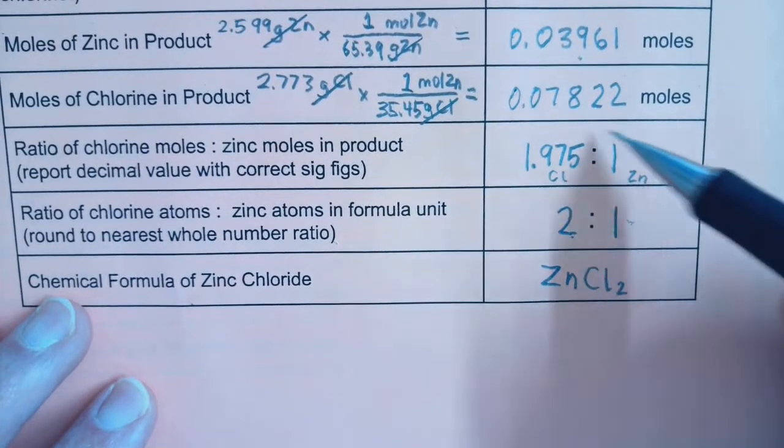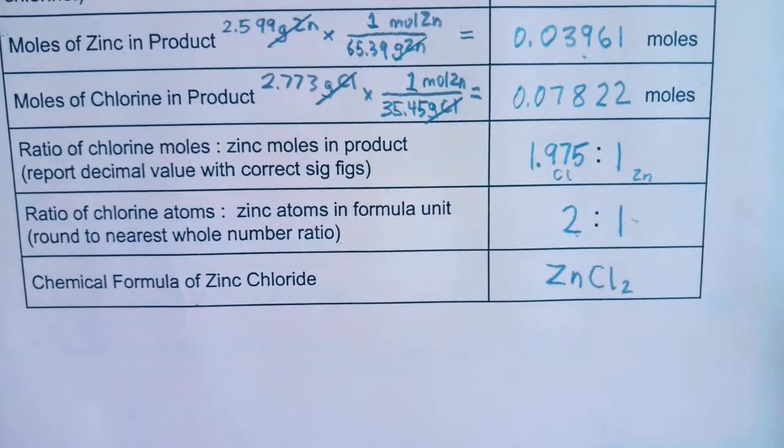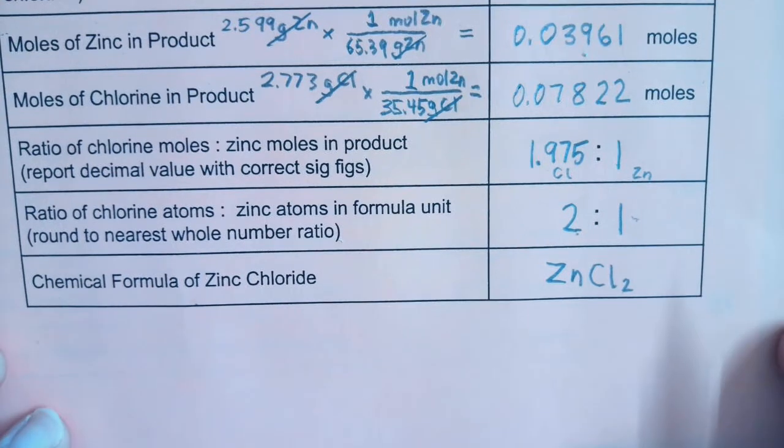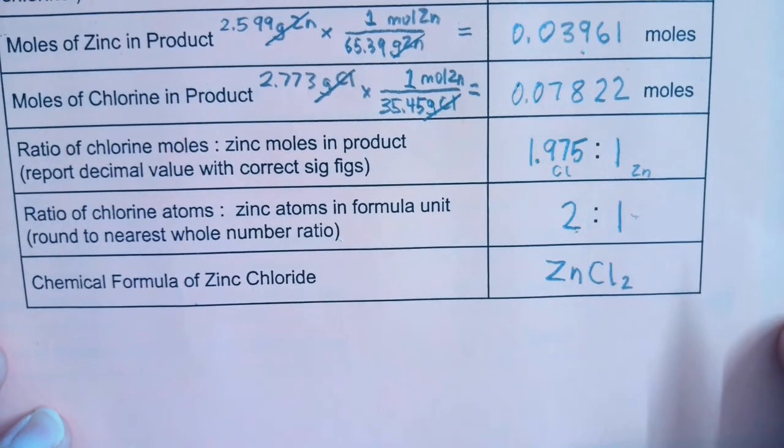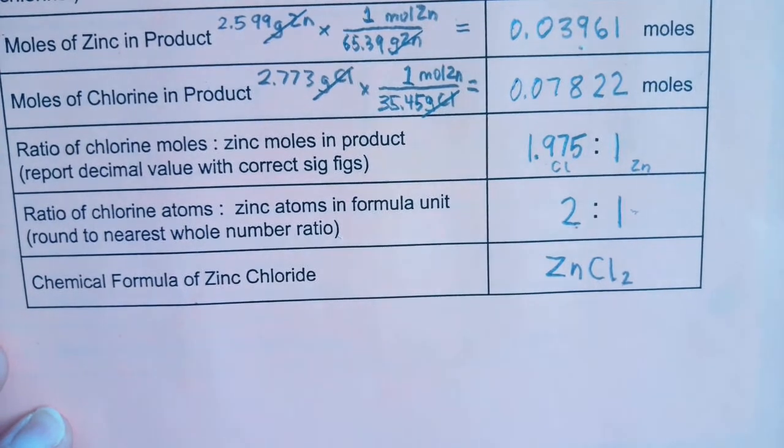Hopefully, your result came out close to this. If you don't have close to a two-to-one ratio, there's something wrong, either with your calculations or maybe something went wrong in the lab with your measurements. Hopefully, that helps you figure out how to do your calculations for the empirical formula of zinc lab.